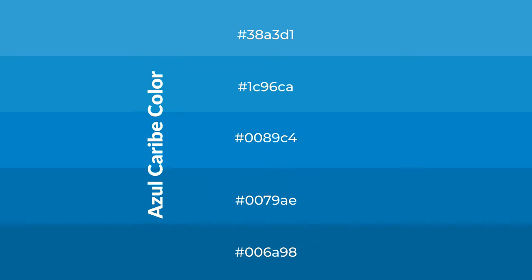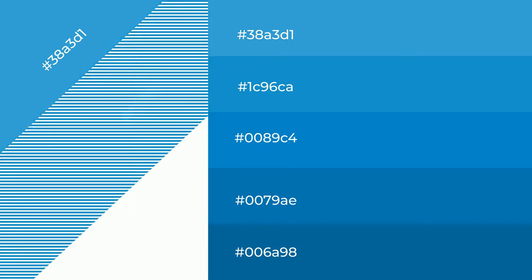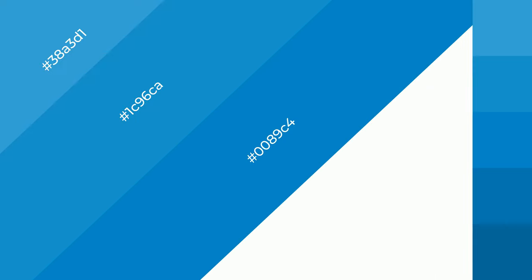To generate shades of a color, we add black to the color. It is used in patterns, 3D effects, and layers. Shades create depth and drama.